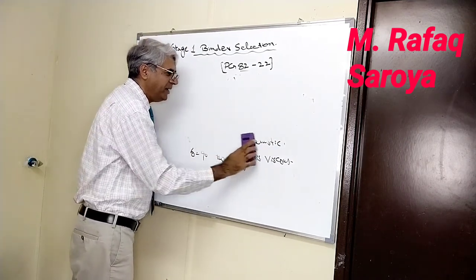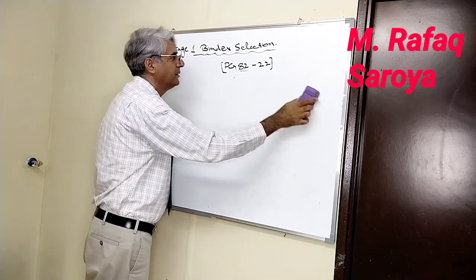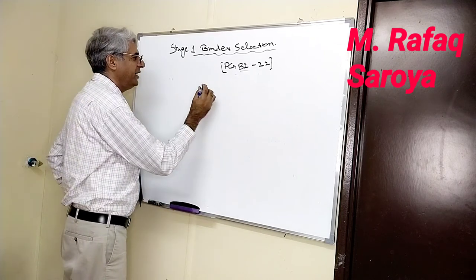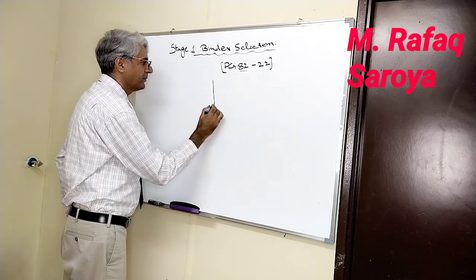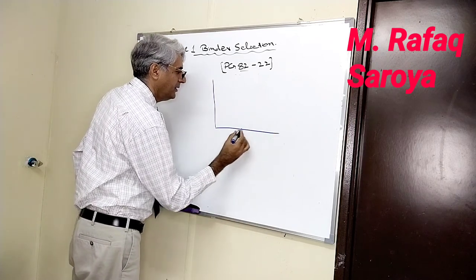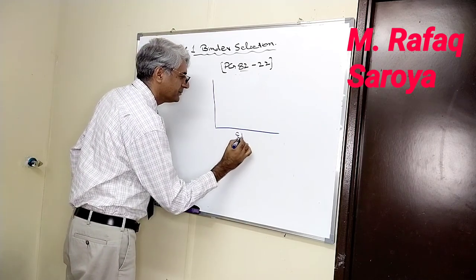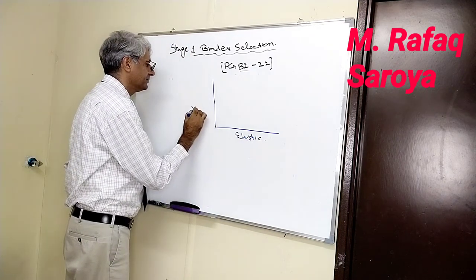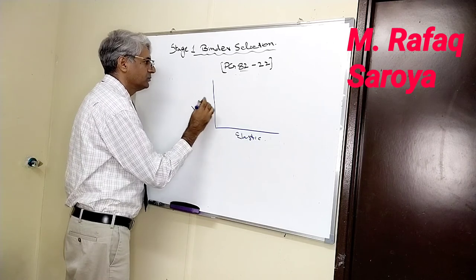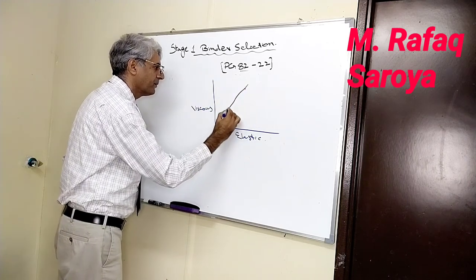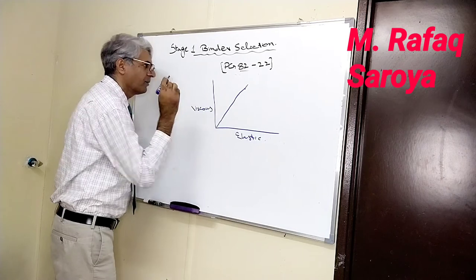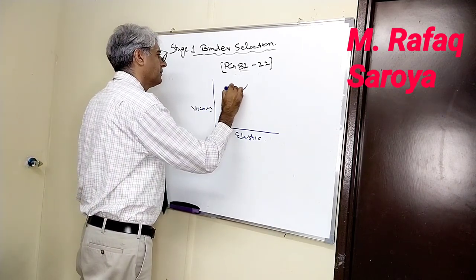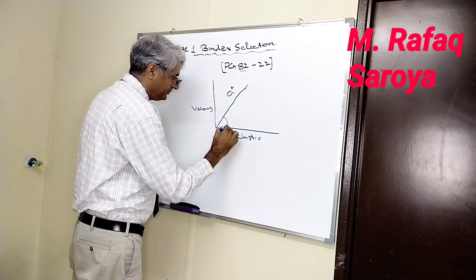This relationship is represented by this diagram. As I have explained you just over here, this is the elastic, this is the viscous. Clear it, this is the G star, and this is the viscous.